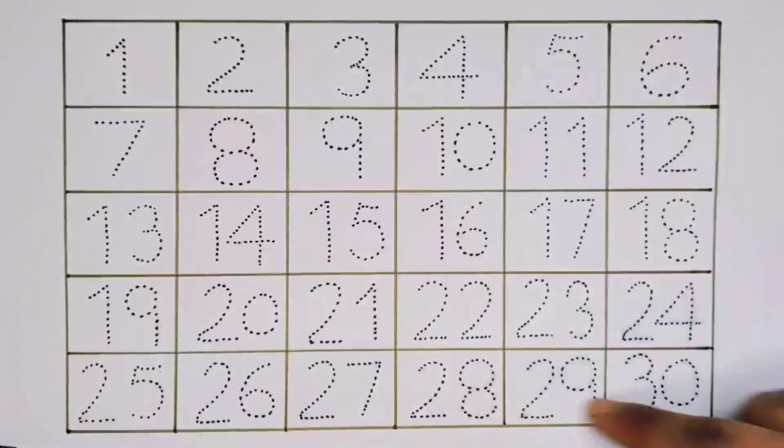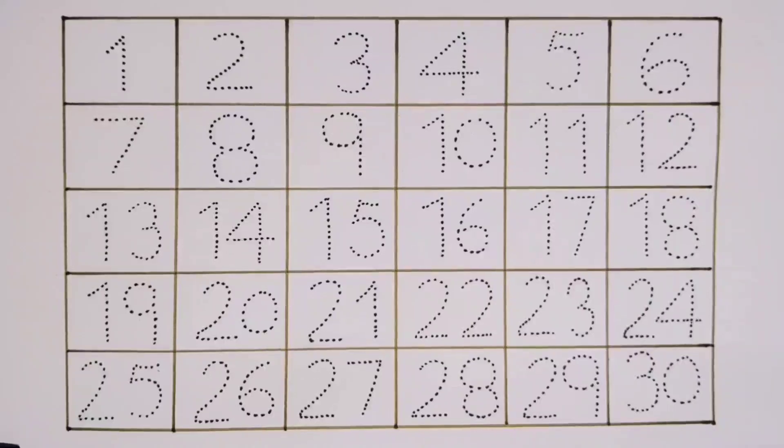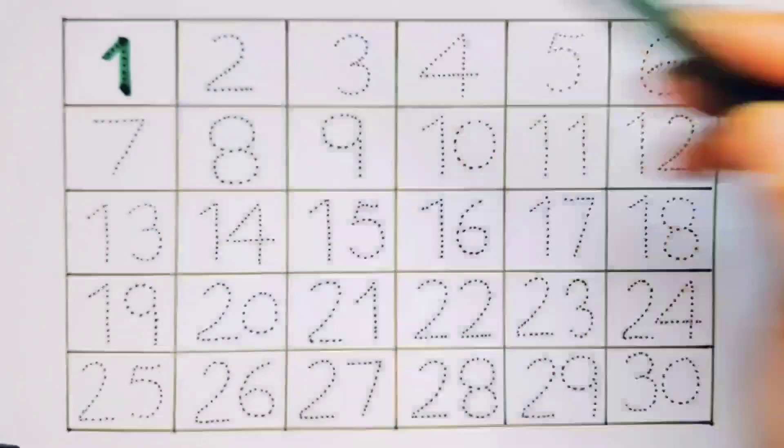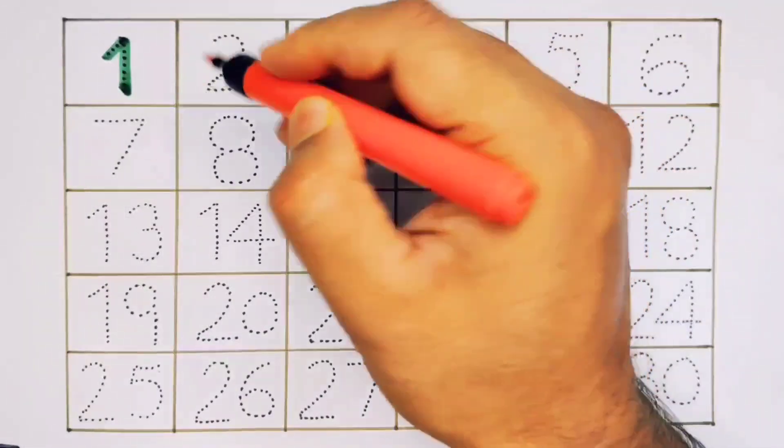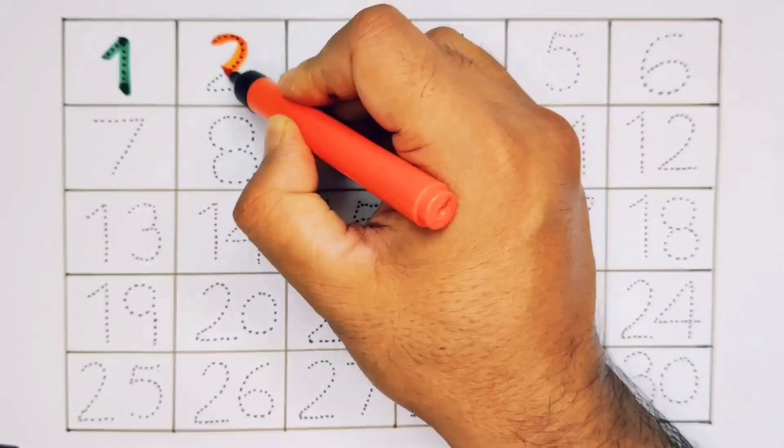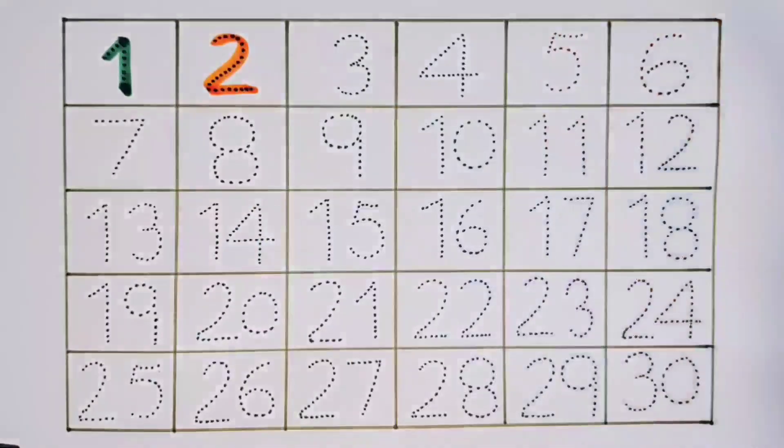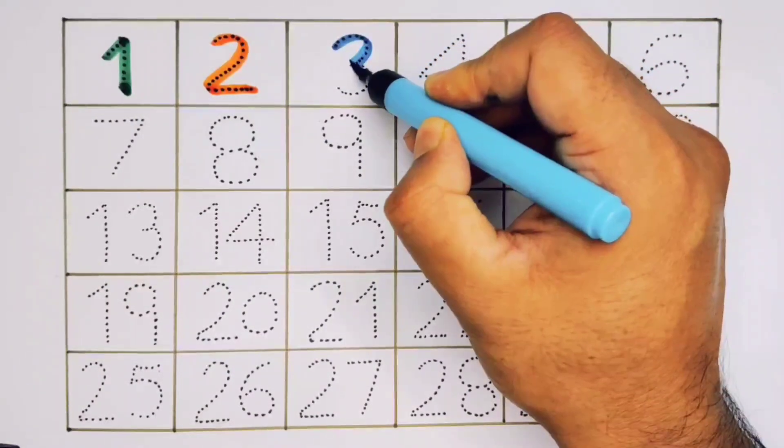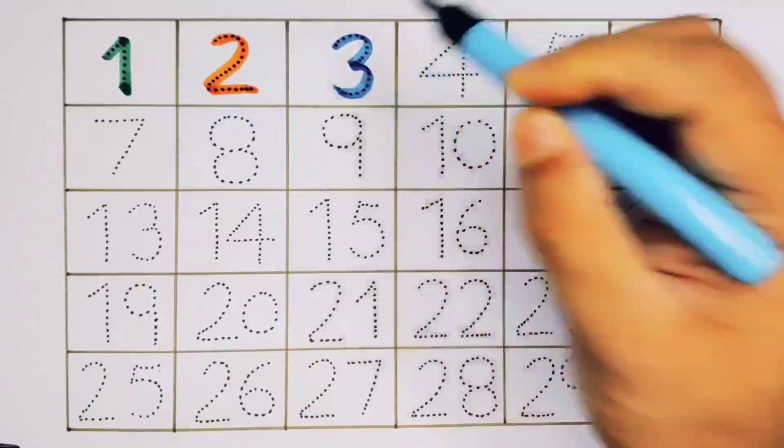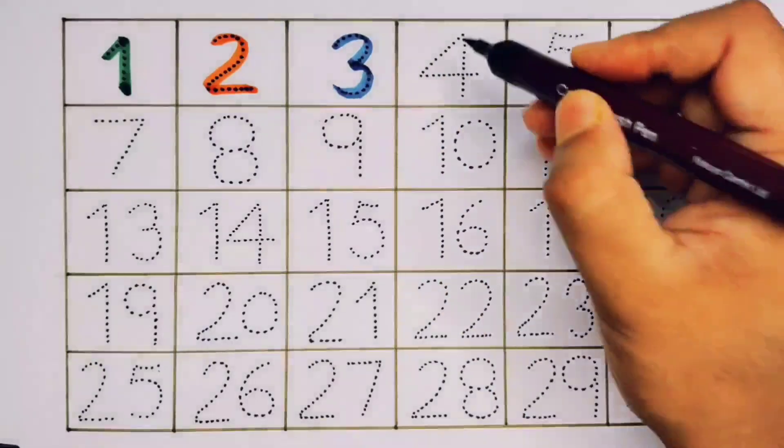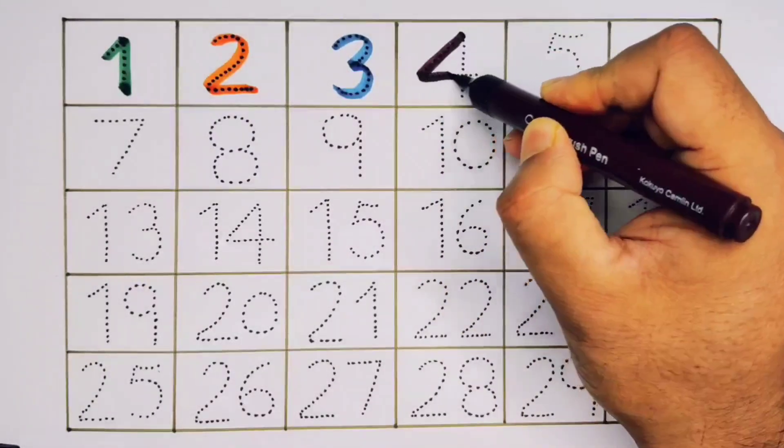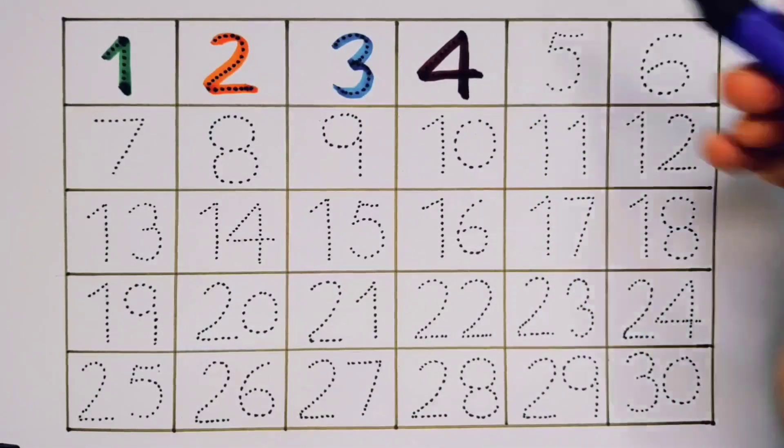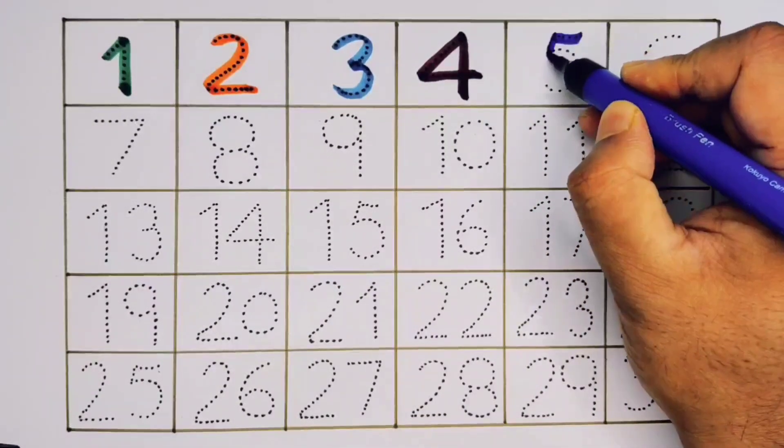Now, let's learn the numbers 1 to 30. 1, 2, 3, 4, 5